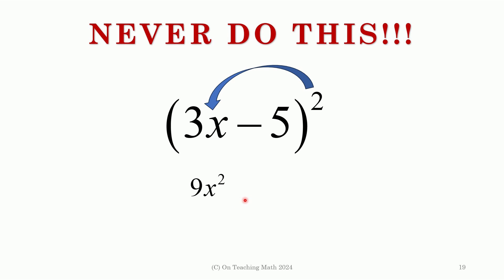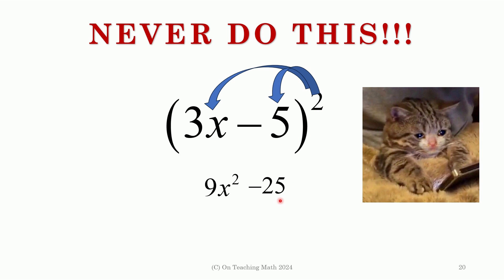Now, the thing you can't do, you cannot distribute an exponent over a positive or a negative. That's not quite how it works. You can't do this right here. That would be 9x squared and this would be minus 25 or plus 25. Don't do that. That makes people very, very sad.